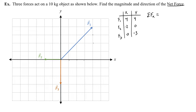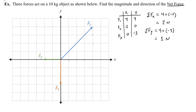So if I sum the x components, I'm going to get 4 plus negative 2, which is 2 newtons. And the y component would be 4 plus negative 3, which is positive 1 newton. Now I can use those components to find the magnitude and direction of my net force.